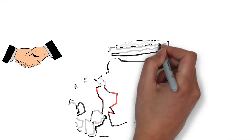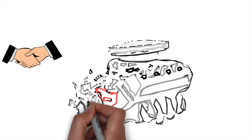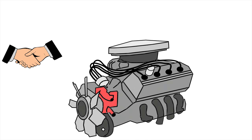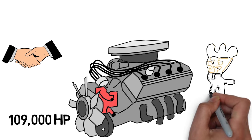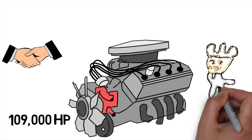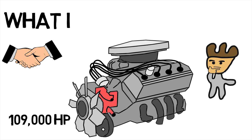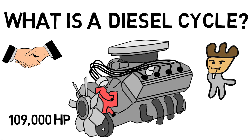Welcome back MechanicalEI. Did you know that the world's largest engine, which makes a whopping 109,000 horsepower, runs on the diesel cycle? This makes us wonder: what is a diesel cycle?